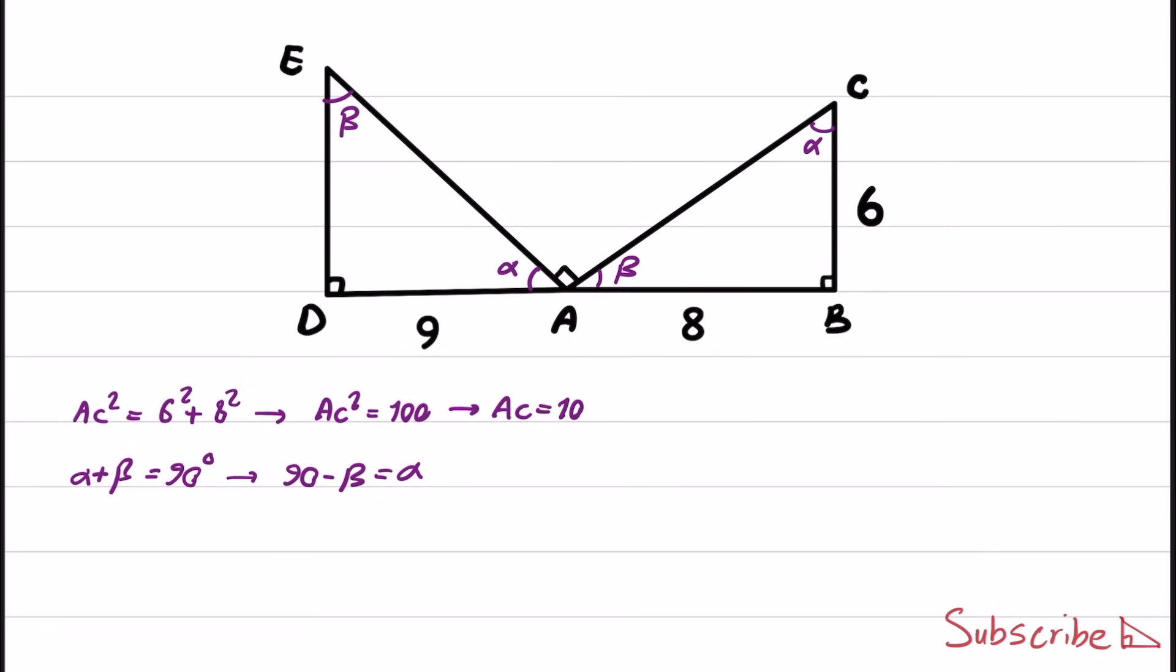So the side opposite to beta divided by the side opposite to 90 degree angle is equal to the side opposite to beta in this triangle divided by this side, which is opposite to 90 degree angle.